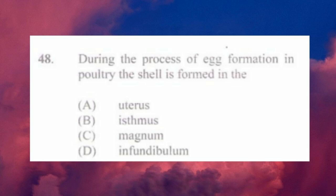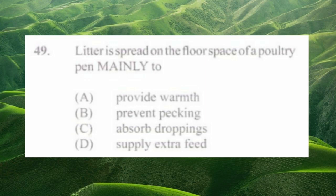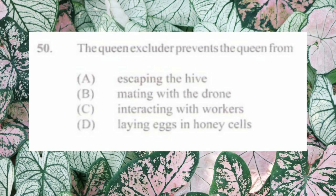Question number forty-eight: during the process of egg formation in poultry, the shell is formed in the a) uterus, b) isthmus, c) magnum, d) infundibulum. The answer is a) uterus. Question number forty-nine: litter is spread on the floor space of a poultry pen mainly to a) provide warmth, b) prevent pecking, c) absorb droppings, d) supply extra feed. The answer is c) absorb droppings. Common litter is sawdust or rice hull.